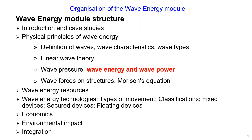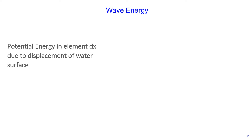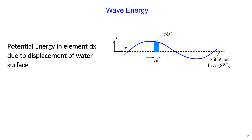In this lecture, we cover two topics: wave energy and wave power. There are two wave energy components: potential energy in element dx due to displacement of the water surface. If we consider a wave and take element dx, we can derive an equation for the potential energy component. I'm not going to show you the derivation — I will show you the final equation for potential energy on the next slide.